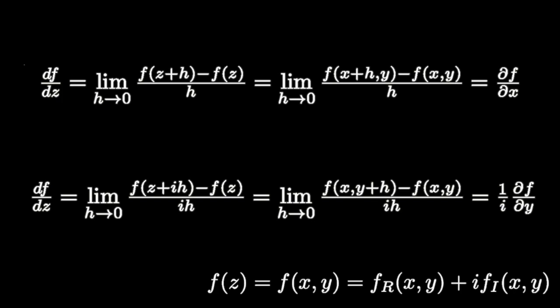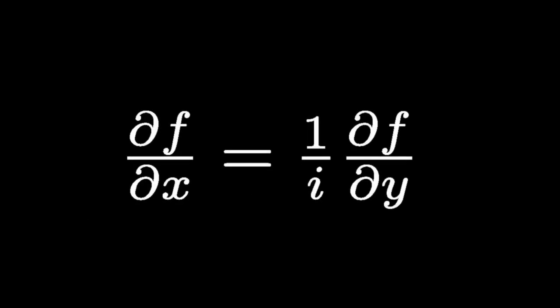Let's make sure we understand what's going on here. In the top equation, we have the complex derivative of f, but when we write out f in terms of its real and imaginary parts, the denominator is a pure real number. But in the bottom equation, the denominator is a pure imaginary number, and this produces a factor of 1 over i on the right-hand side. In order for these two limits to be equal, it's necessary that the function f satisfies this partial differential equation, which is called the Cauchy-Riemann equation.